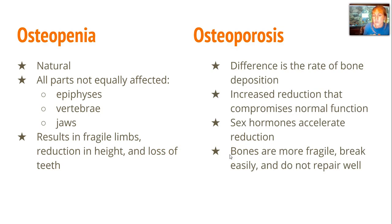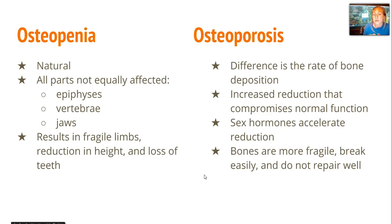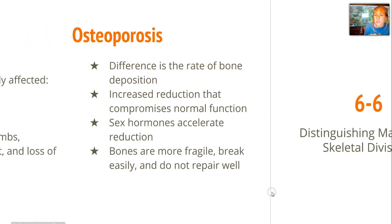Osteoporosis is not normal because the rate of bone deposition is increased, compromising normal function. It's usually accelerated due to an imbalance in sex hormones, which creates more fragility — breaking bones more easily and not repairing very well. This is why elderly people have to be very careful about not falling; hip fractures are very common in elderly people with osteoporosis.